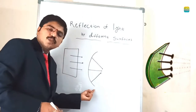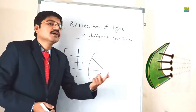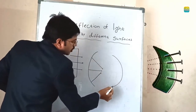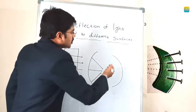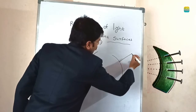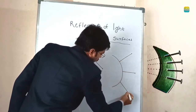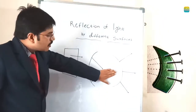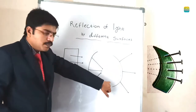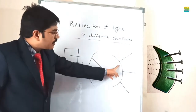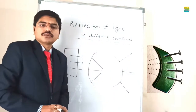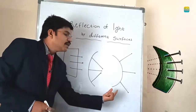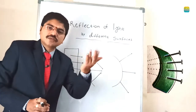This kind of mirror is called convergent. For divergent, in the third step, curve the sheet outward. Once you curve outward, automatically the three pins go in all directions. So this kind of mirror gives rays going in all directions — that is divergent. This way we can easily identify which is convergent and which is divergent by this activity.